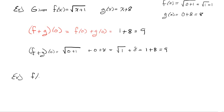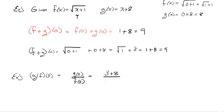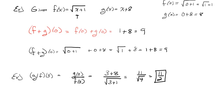Now let's find (g divided by f) of 3. This equals g of 3 divided by f of 3. g of 3 is 3 plus 8, which is 11. f of 3 is the square root of 3 plus 1, which is the square root of 4, which equals 2. So we get 11 over 2, or eleven-halves. In this section we work through these problems systematically, applying basic algebra to functions.